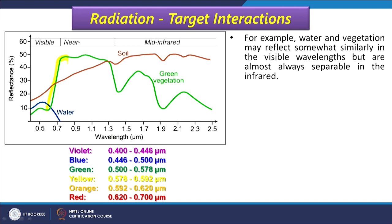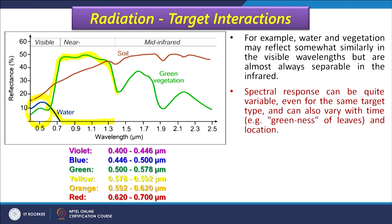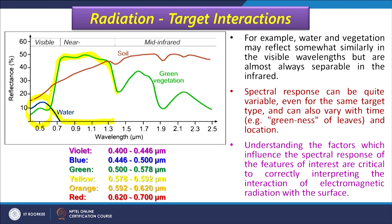Spectral response curves can be quite variable even for the same target type, and can also vary with time — especially for vegetation, water bodies, and surfaces where roughness plays a role. Understanding the factors which influence spectral response of features is critical to correctly interpreting the interaction of EM radiation with the surface. This understanding allows us to correctly utilize and interpret satellite images.